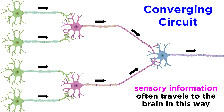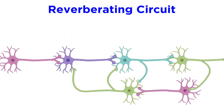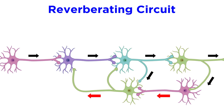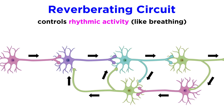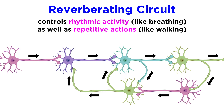Sensory information often travels to the brain in this fashion. Next we see a reverberating circuit. This is where neurons in a chain can feed back to previous neurons to form an oscillating circuit. These types of circuits control rhythmic activity, like breathing, as well as repetitive actions, like walking.